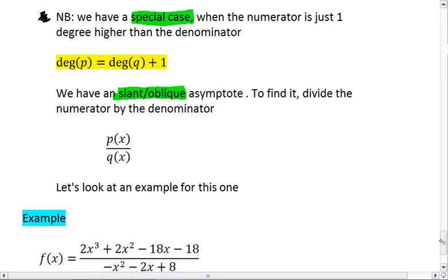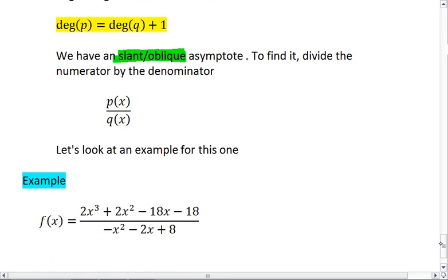Let's look at an example to see exactly why we do that. Here's our example. We have a cubic over a quadratic. We see that the degree of the numerator is 3, and the degree of the denominator is 2. The difference between them is 1.